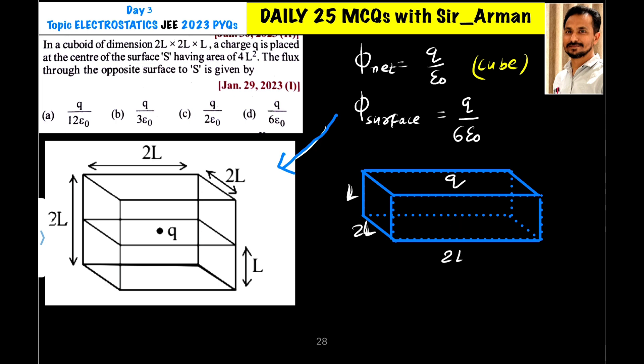Let us assume I am putting this charge at this surface, top surface. Now we have to find the flux through the opposite surface. So if I place charge to the top surface, I have to find the flux through the bottom surface.